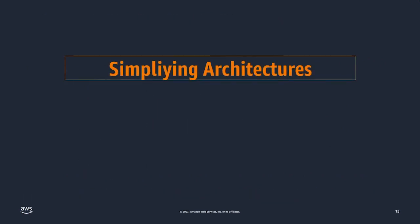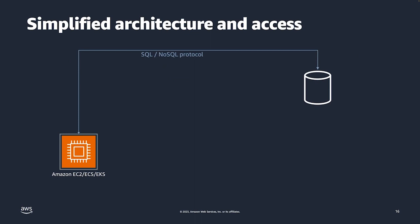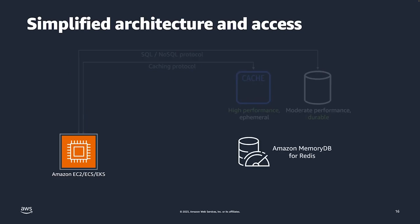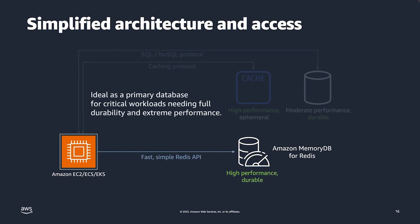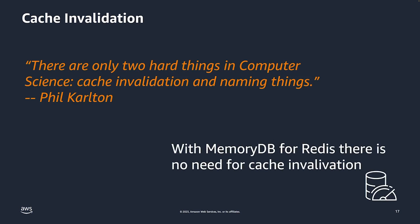The idea of simplifying your architectures is that you often have to think about what you're going to use when creating a highly available microservice. The regular approach has been a SQL or NoSQL database that is usually durable but disk-based, giving moderate performance, so you often have to apply a cache in front of it — but it's ephemeral and your application has to talk two different protocols. With MemoryDB for Redis, you simplify into a single service using the fast and simple Redis API. It gives you the high performance and durability you require. As the quote goes, there are only two hard things in computer science: cache invalidation and naming things. With MemoryDB for Redis, there's no need for cache invalidation.